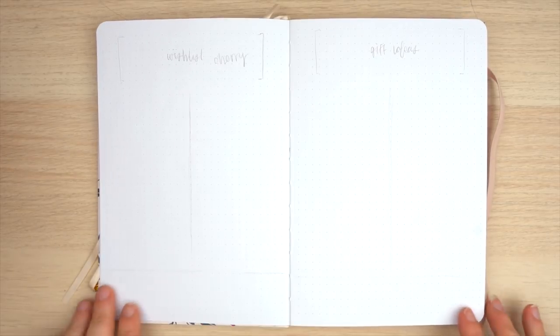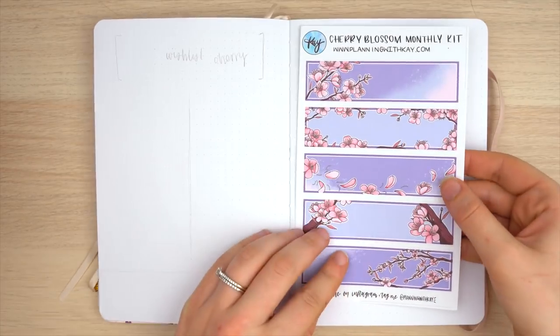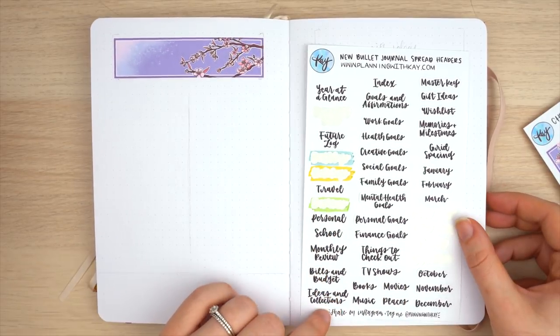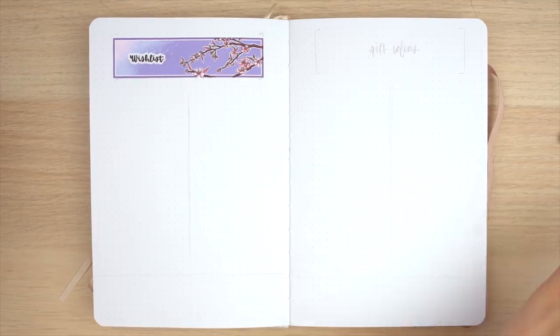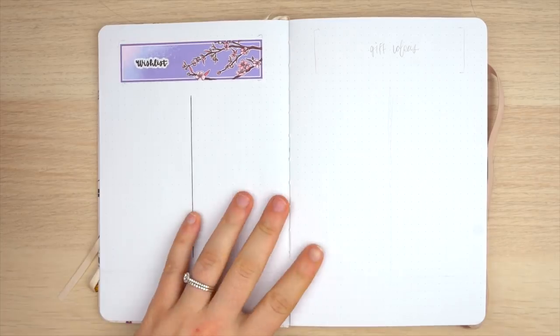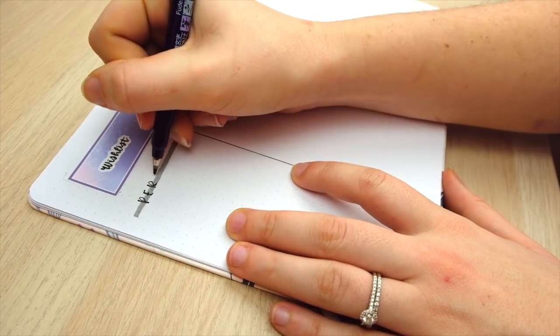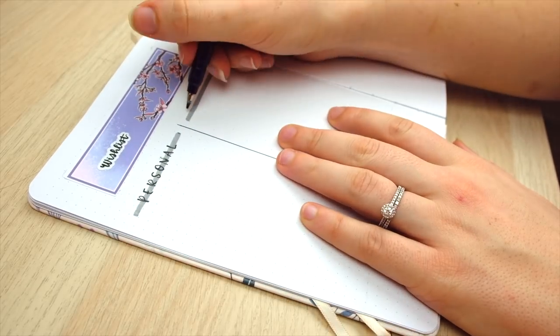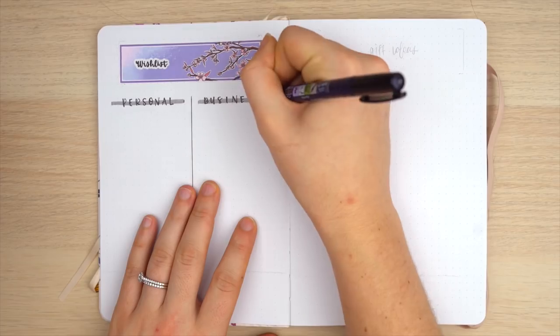Alright, moving right along to the next spread in my migration setup here, I'm going to be creating a spread with a wish list and a gift ideas page. This is basically going to be a spot for me to write down any purchases that I'm thinking of making for myself in the future, both personal and business purchases, and then I'm also going to have a spot to keep track of gift ideas for all of the most important people in my life, so that way once birthdays and holidays roll around I'll already have an idea of some things that I can buy.